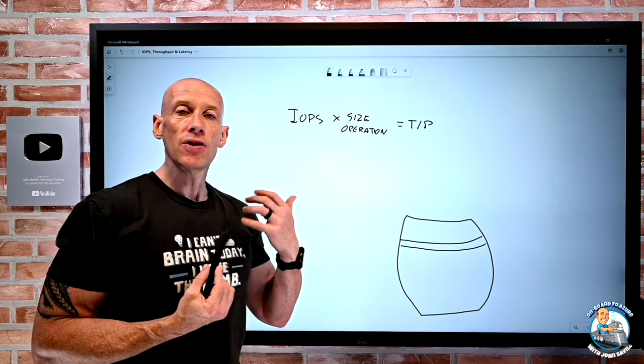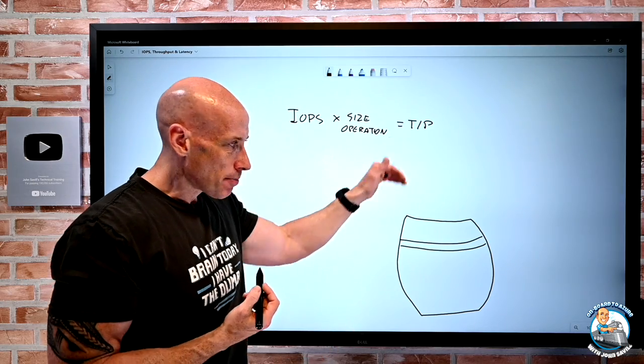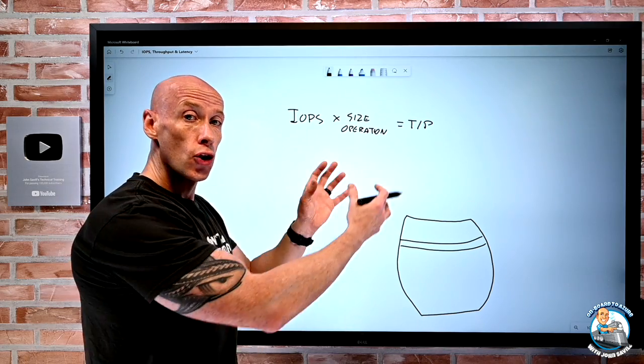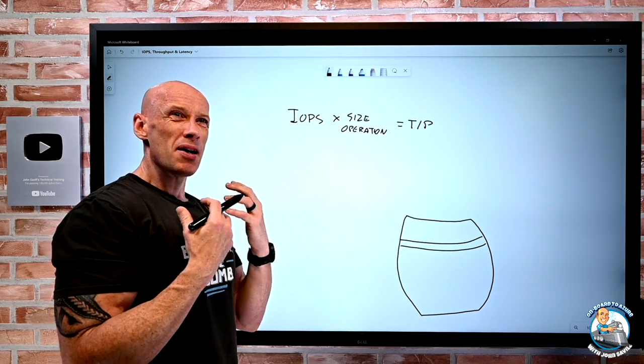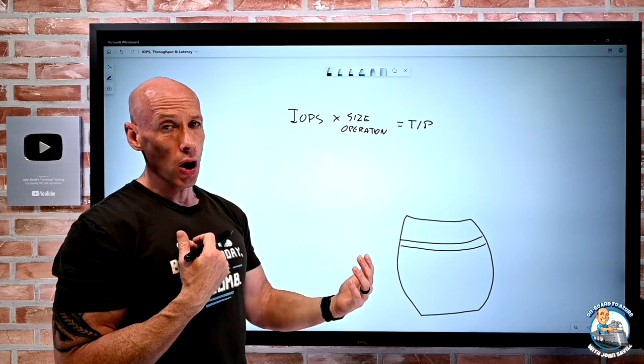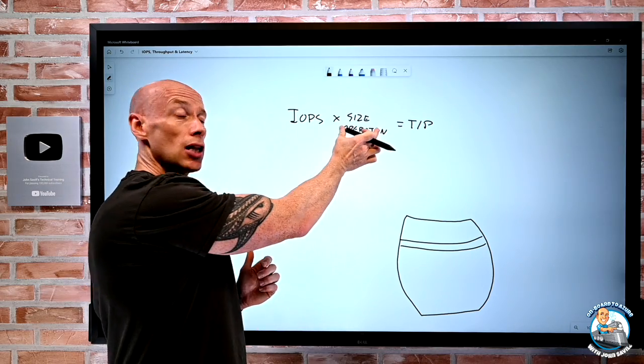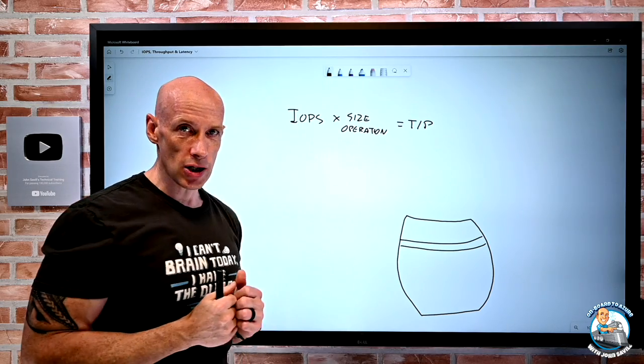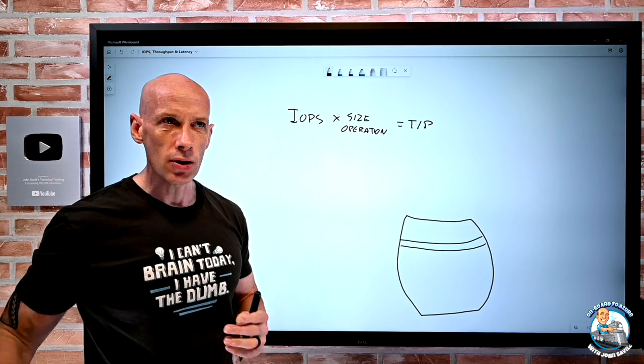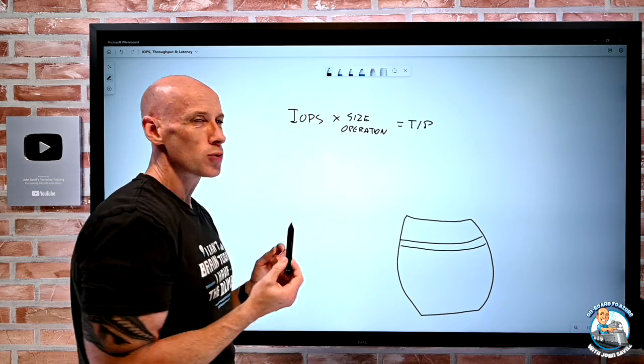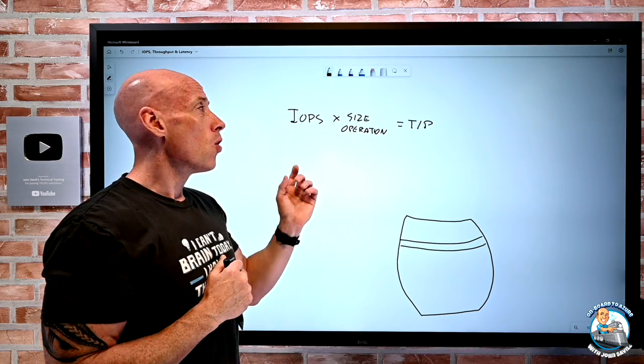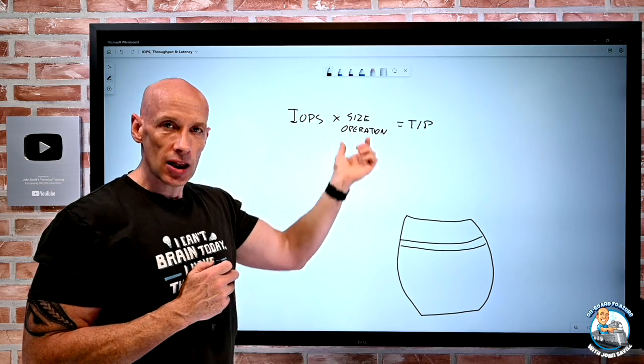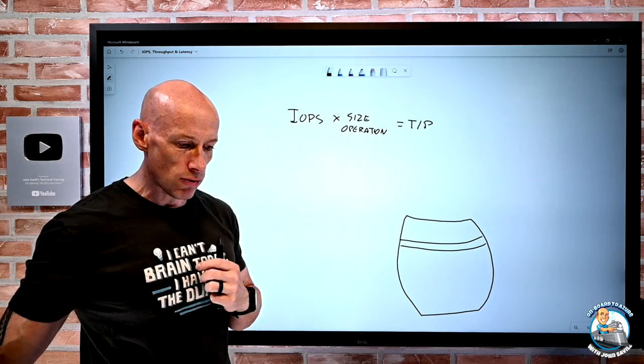And many storage devices will have a maximum of both of those. It can accept a certain number of operations and it can accept a certain throughput. And generally what we're going to work out is, it's generally pretty consistent for our workload. A database will have fairly consistent, normally it's fairly large operation sizes, where some other workloads may have very small operation sizes. So depending on the size of the operation, we might care more about IOPS because we're doing lots of very, very small operations. Or we might care more about the throughput because it's not so much a huge number of operations, but they're very, very large. So it's the throughput that we really, really care about.